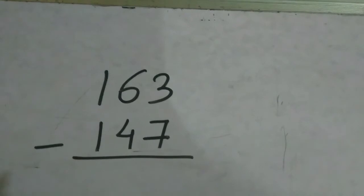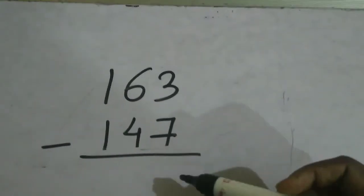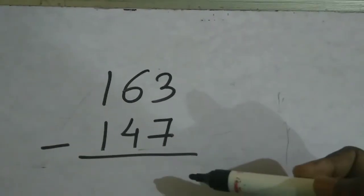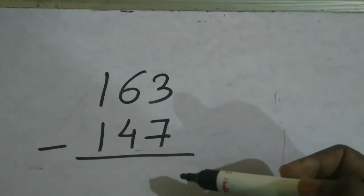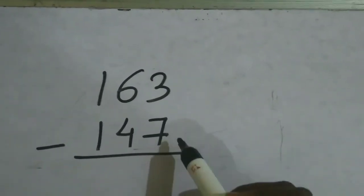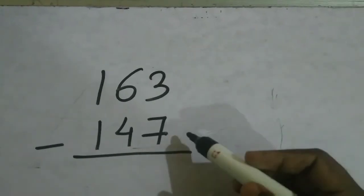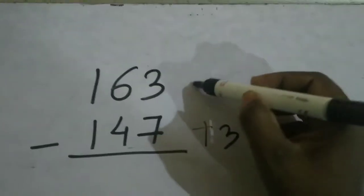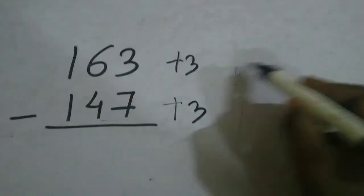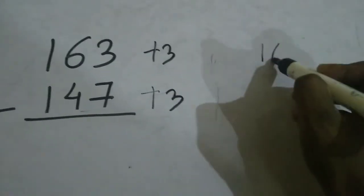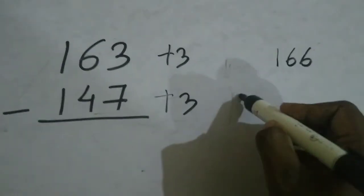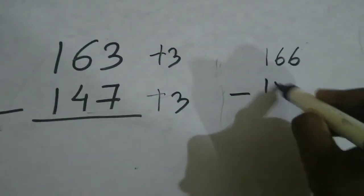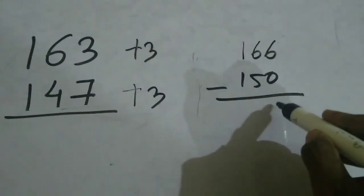Okay, let's solve this three-digit subtraction. So simple guys, no need of any carry and all the stuff. Here 147 is given, just make it 150, right? To make it 150 we have to add 3 here and here also we have to add 3. Then it will become 163 plus 3 is 166 minus 147 plus 3 is 150.